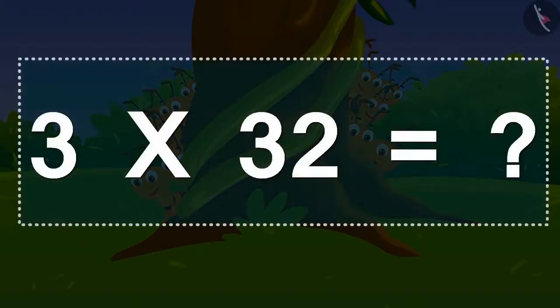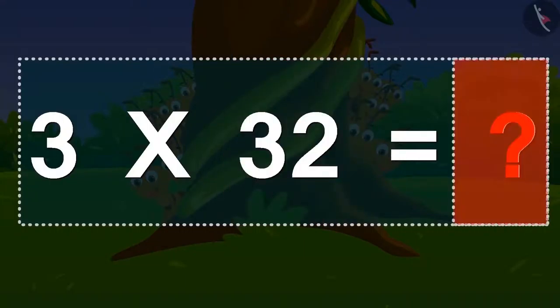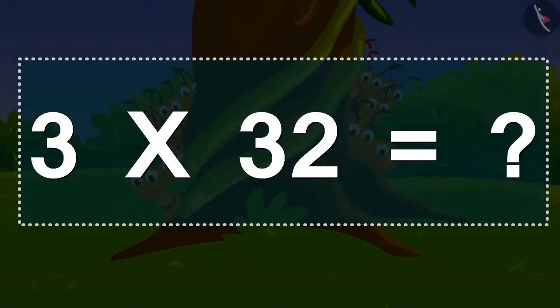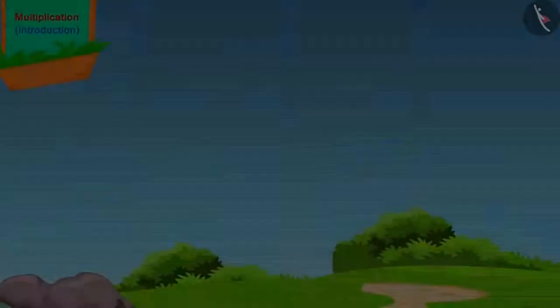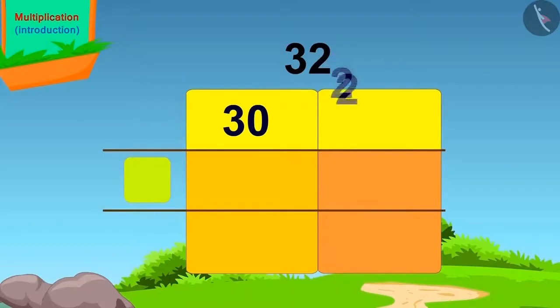Can you tell how many ants were there in all? How do we write it in the form of multiplication? 3 times 32 is? But we do not know the multiplication table of 32. What will we get if we split 32? 30 and 2.